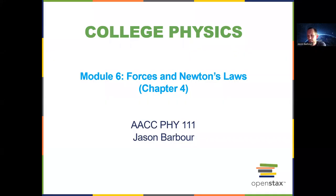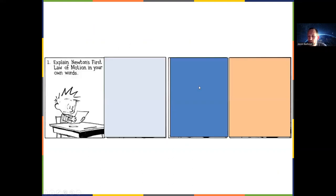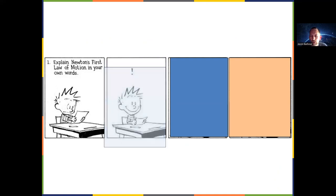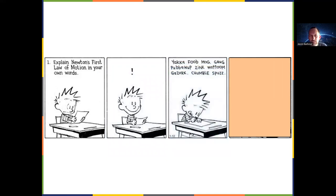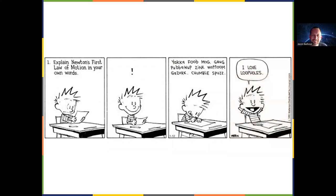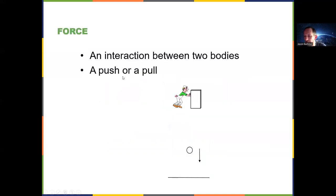You should be able to see my screen now. It's Chapter 4. Calvin and Hobbes, some of my favorite comic characters, explain Newton's first law of motion in your own words. Calvin — he's no dummy.